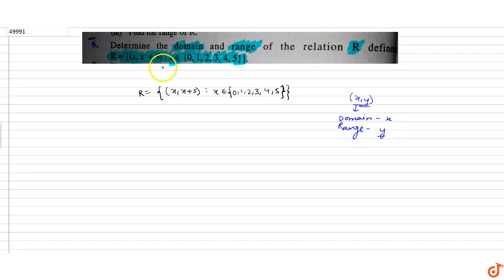So in this case, our domain is x. So x की values क्या क्या हो सकती है? 0, 1, 2, 3, 4, 5. क्योंकि यह हमें given है. अब range क्या होगा? Range is x plus 5.